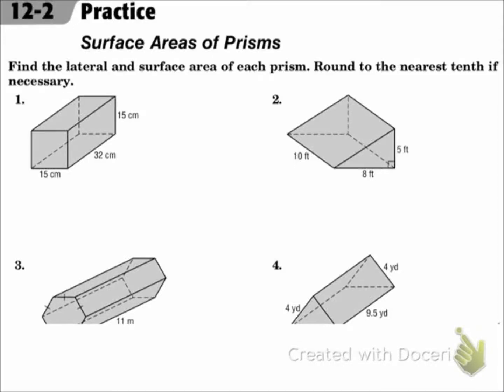This is lesson 12.2, Surface Areas of Prisms. Your objectives are to find lateral and surface area of prisms and cylinders. Find the lateral and surface area of each prism, round to the nearest tenth if necessary.